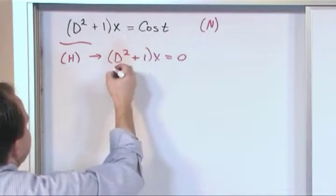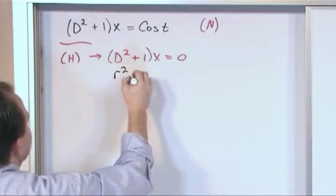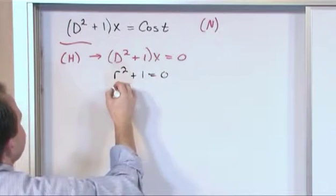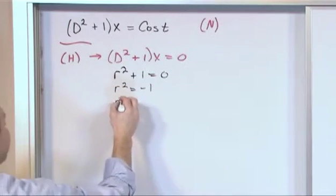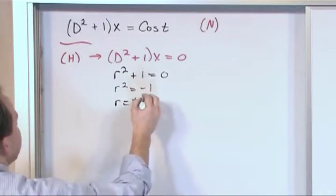So what we're going to do is just treat this like the polynomial method. r² + 1, set it equal to zero. r² equals negative one. So we take the square root of both sides. r is going to equal plus or minus i.